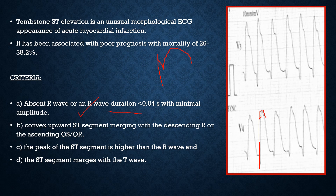Criterion three: the peak of the ST segment is higher than the R wave. In this case with a QS pattern, we apply it where visible. The peak of the ST segment is higher than the peak of the R wave. If an R wave is present, apply these two criteria accordingly.